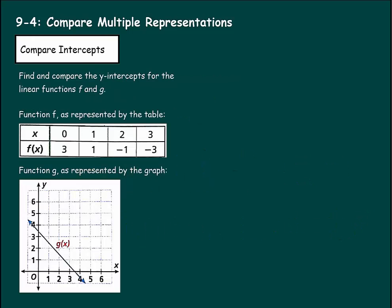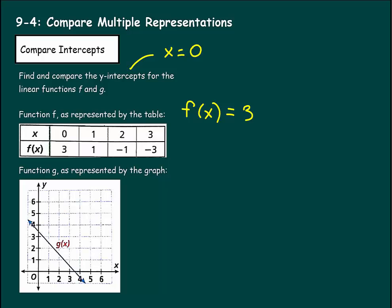Now we're going to compare intercepts. Find and compare the y-intercepts for the linear functions f and g. Function f is represented by a table and function g by a graph. Remember, the y-intercept is when x equals 0. In the table, when x is 0, the output is 3, so for f(x) the y-intercept is 3. For g(x), on the graph we look where x is 0 and find the y-value, which looks like 3.5. So g(x) equals 3.5.